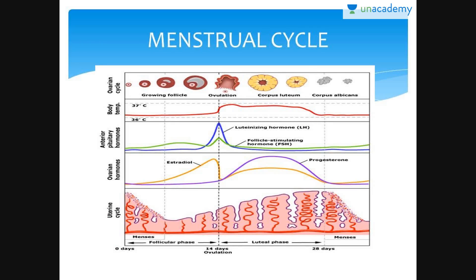The menstrual cycle is the reproductive cycle of female primates. The first menstruation that begins at puberty is called menarche. The menstrual cycle repeats at an average interval of 28 to 29 days, with the ovum released in the middle of each menstrual cycle.